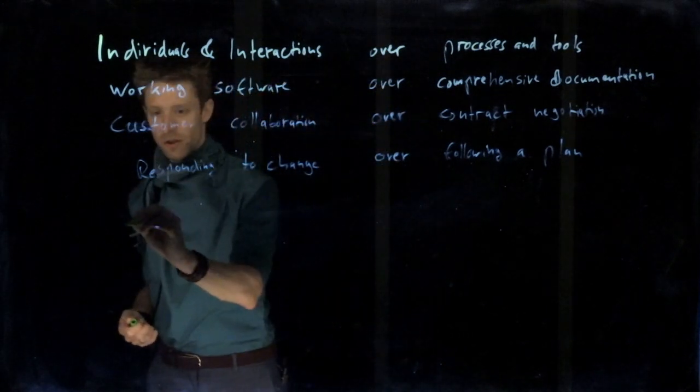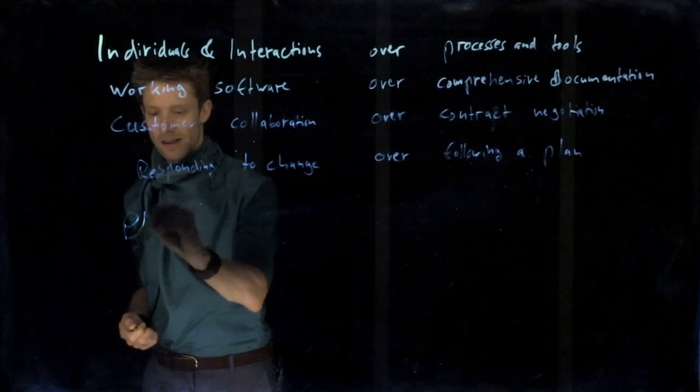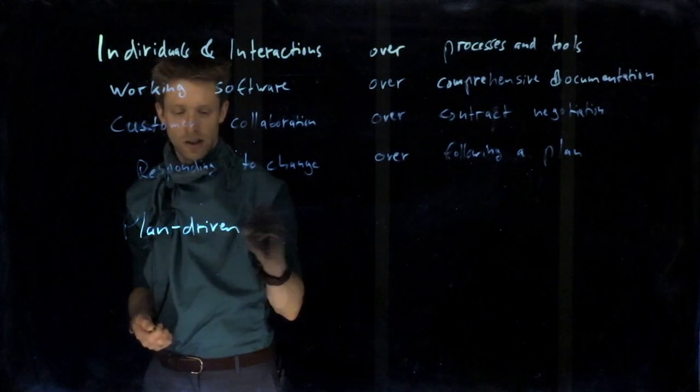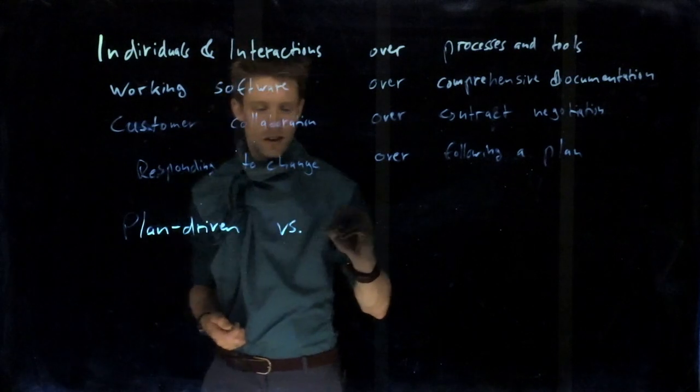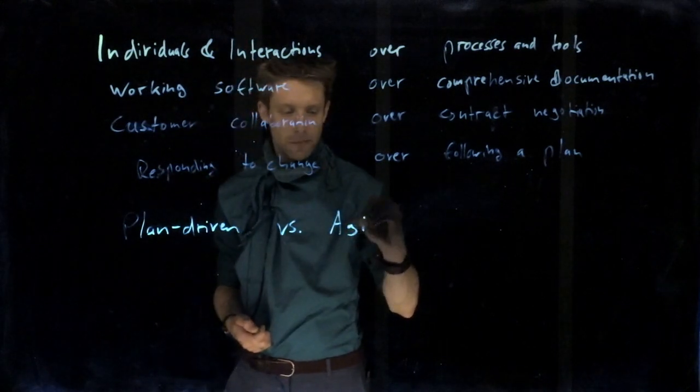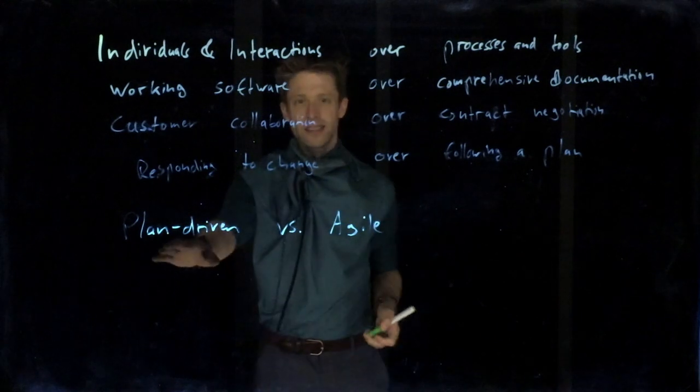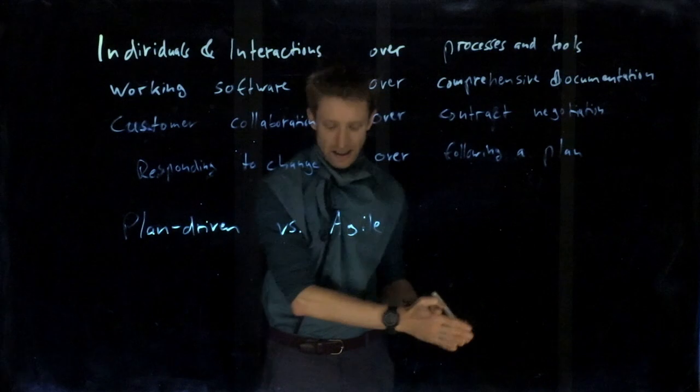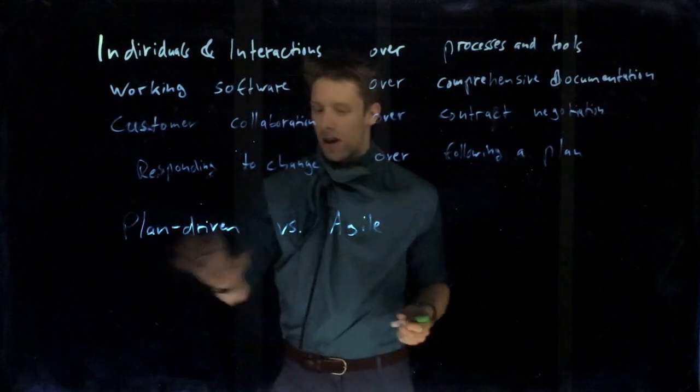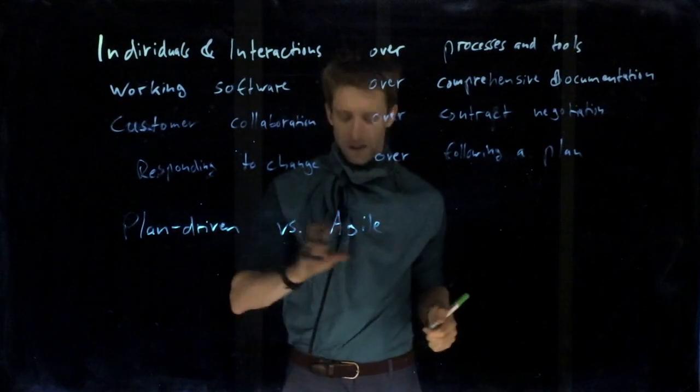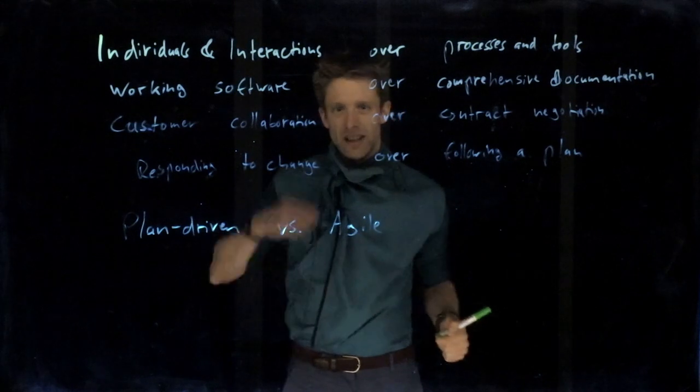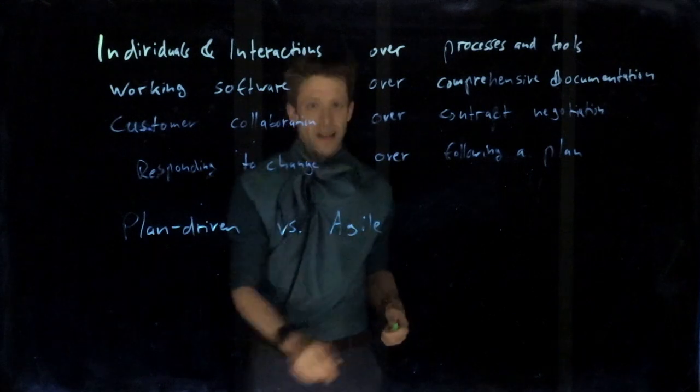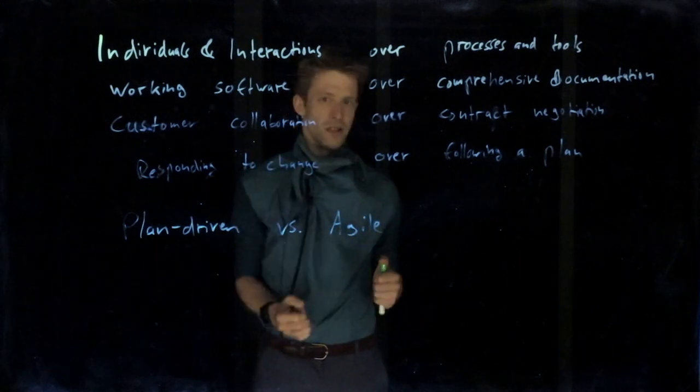Often enough, you'll see it compared to what are called plan-driven processes. Plan-driven, as the name suggests, is very much planning something and then following that plan. That's contrasted by agile development, where the focus is much more on smaller increments and not planning ahead too far. There is a plan in agile, but it's not a very central element.